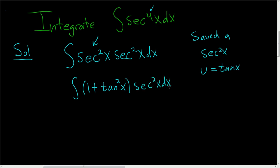At this point, it's clear. So u, I'll write it again, u is tangent x. That means du will be secant squared x dx. So this ends up being the integral of 1 plus u squared du. Pretty straightforward.